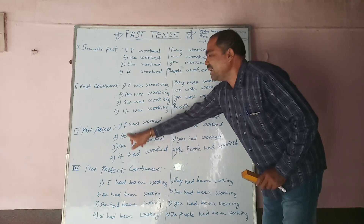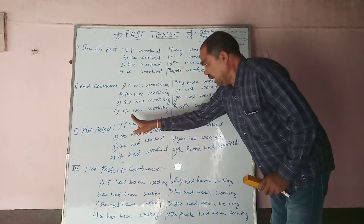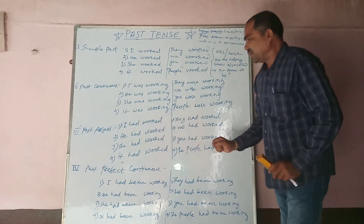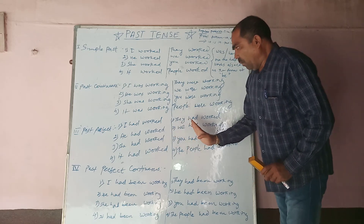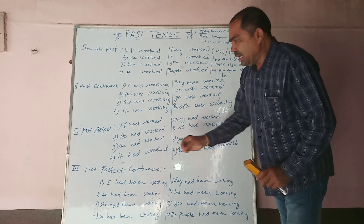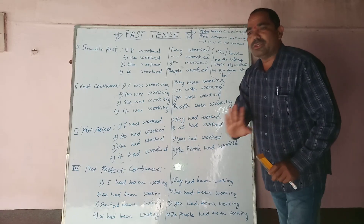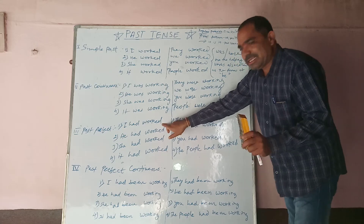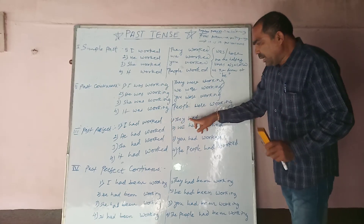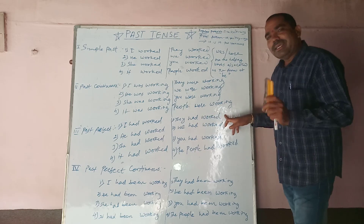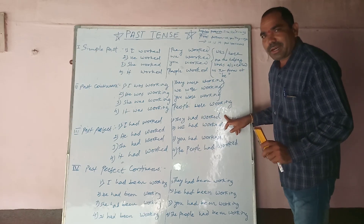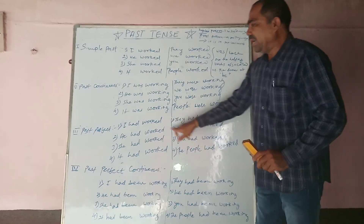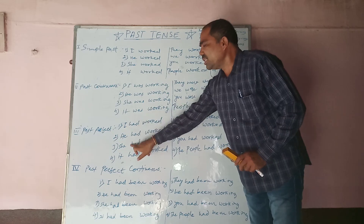If you take the example of past perfect after using the plural pronouns, then there is no change at all. In the perfect form using 'have', there is no change at all. As 'I had worked' is an example of past perfect with a singular pronoun, in the same way 'they had worked' is also an example of past perfect but with a plural pronoun.